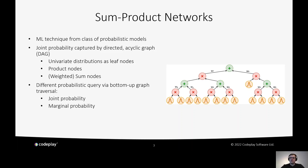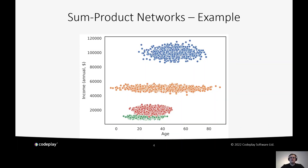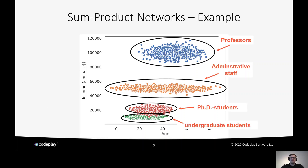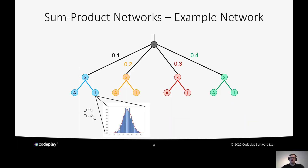This is rather abstract, so let's look at an example. We have a distribution of data here with four clusters representing age and income at a typical university: professors, administrative staff, PhD students, and undergraduate students. From this dataset and distribution, we can learn an SPN graph using SPN learning algorithms. The result would be a DAG with leaf nodes for age and income, and the income for one of these clusters would look like a distribution of income in that group of people.